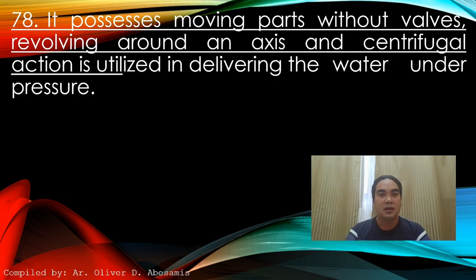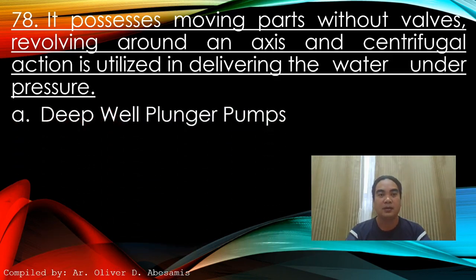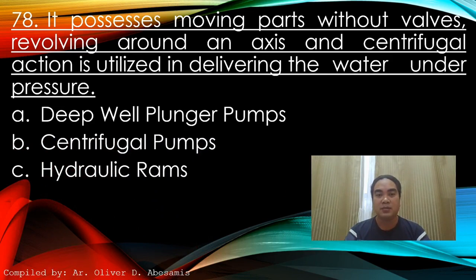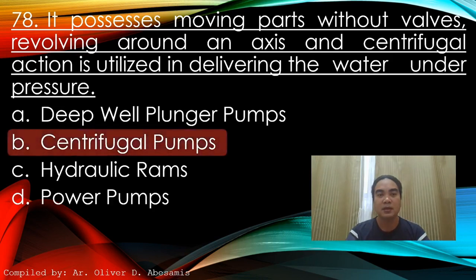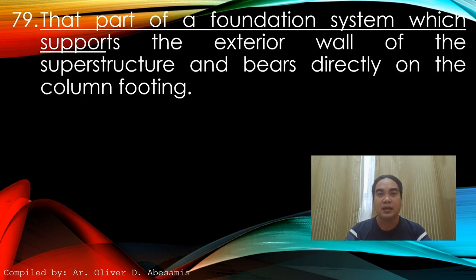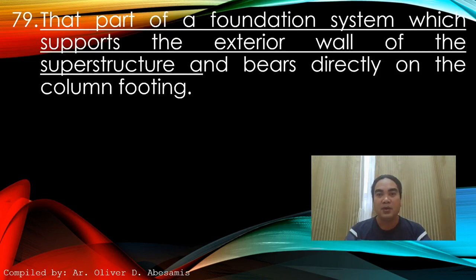Question 78: It possesses moving parts without valves, revolving around an axis and centrifugal action. It is utilized in delivering water under pressure. A) Deep well plunger pumps, B) Centrifugal pumps, C) Hydraulic rams, D) Power pumps. Answer: B) Centrifugal pumps.